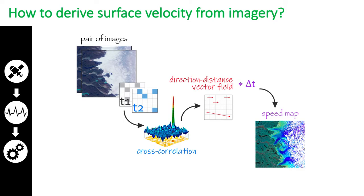Just a few words about satellite image processing and how to get the surface speed from it. At the core of our processing, we use an algorithm previously created by other authors and widely used in the community to derive ice speed from a pair of images. The method recognizes the same pieces of surface on both images, which allows us to calculate the displacement and then convert it into speed, as the time interval is known.